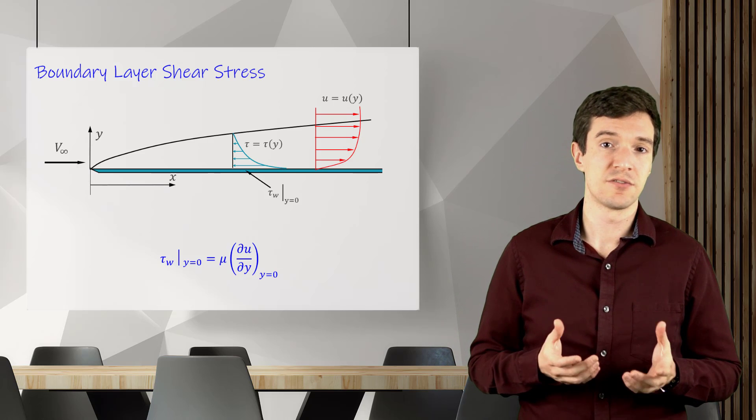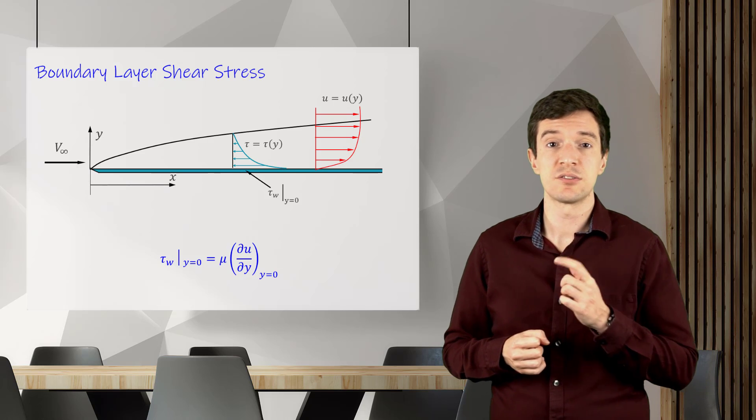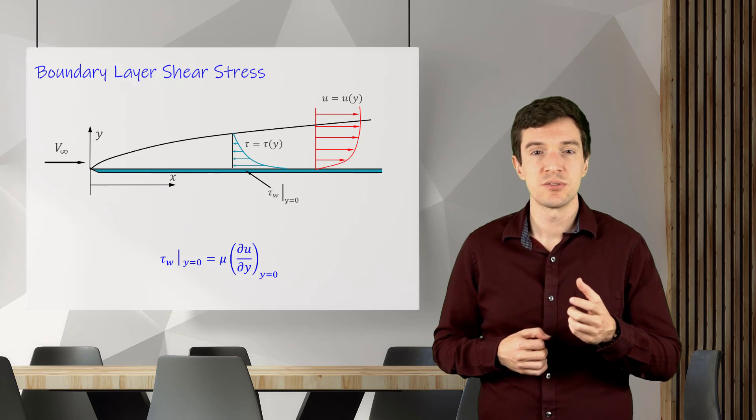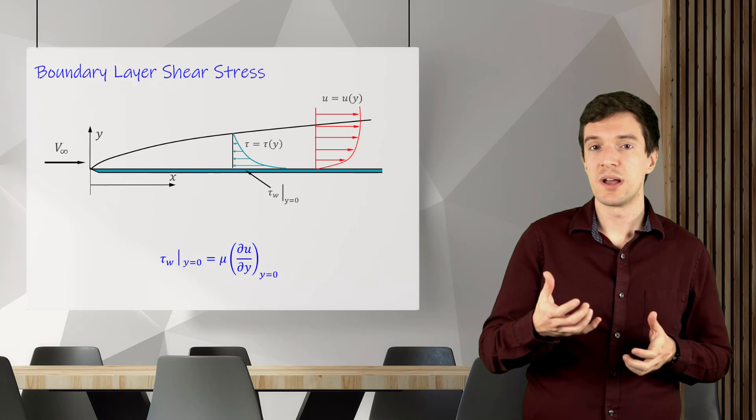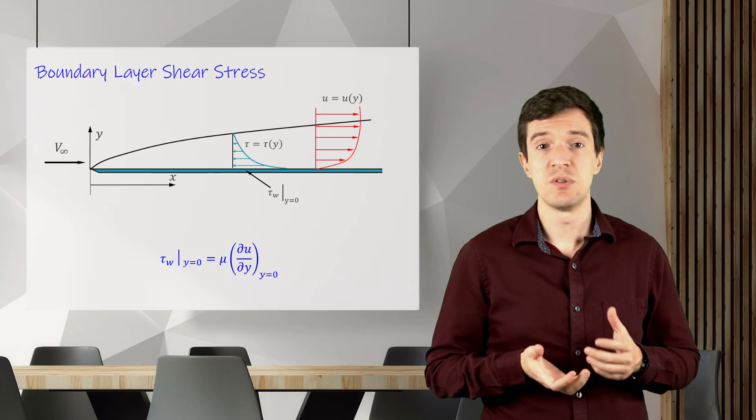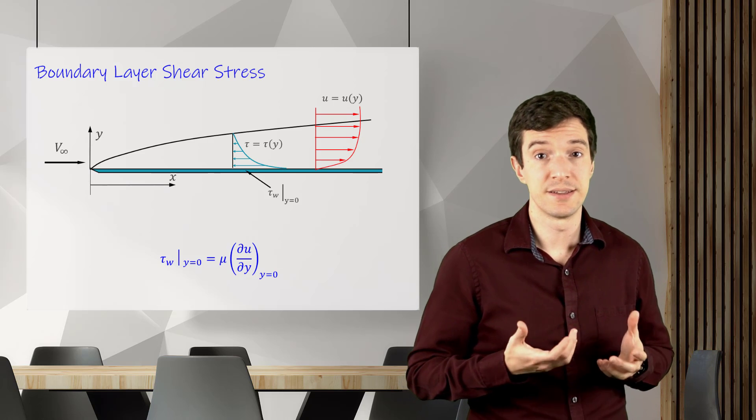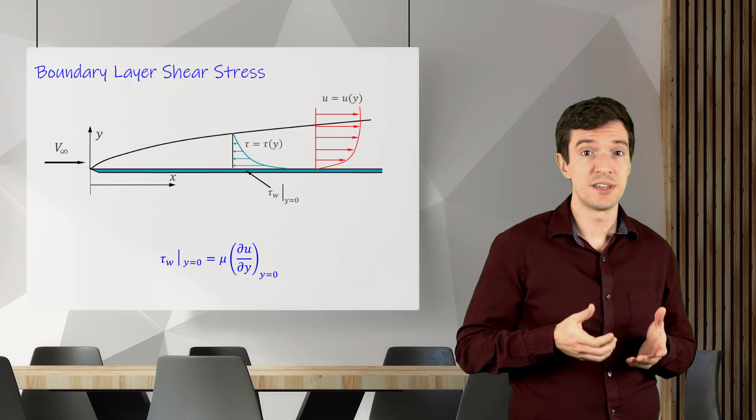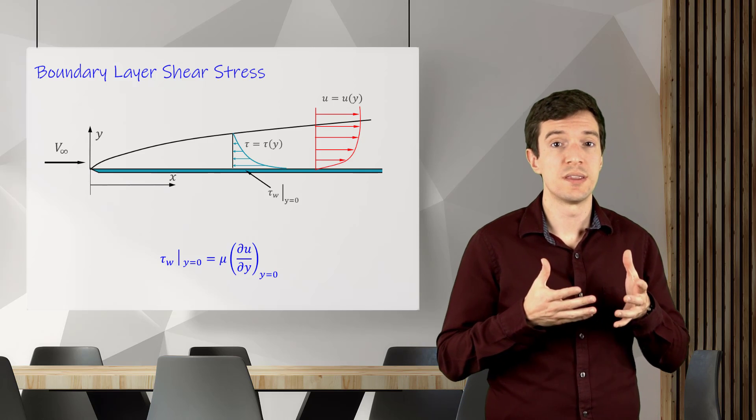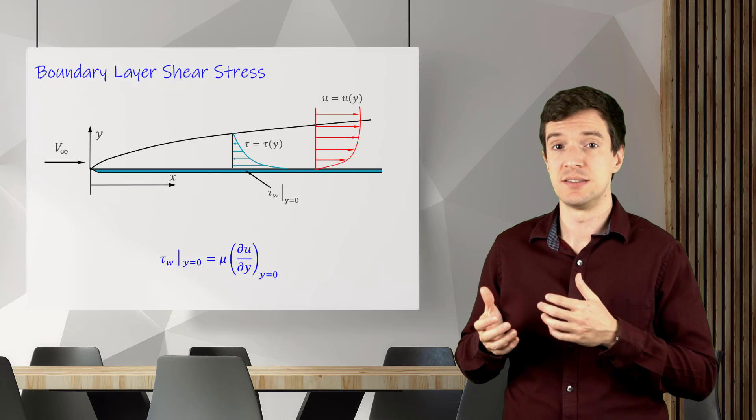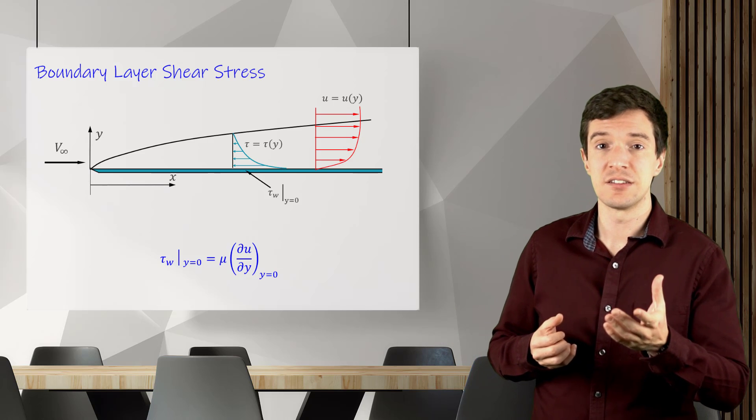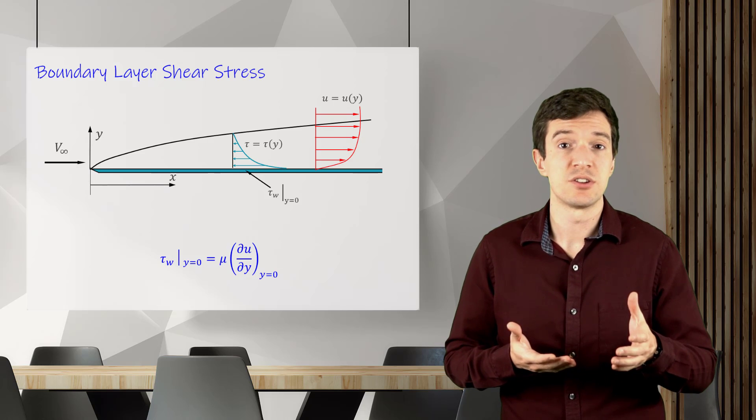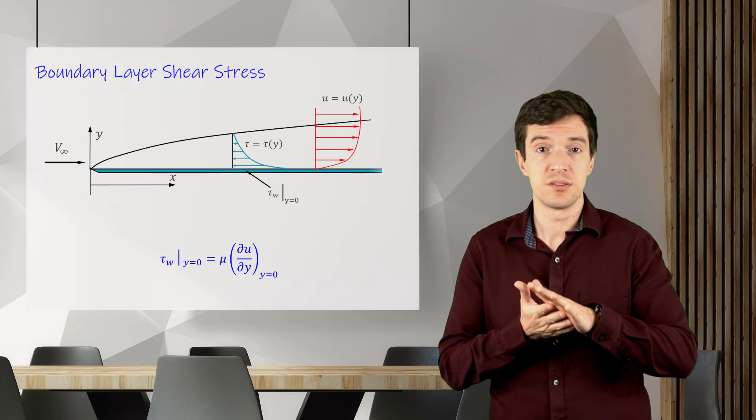As you can see from the sketch, the gradient of velocity is stronger near the wall, and so the shear stress, while both reduce as we move towards the boundary layer edge. An interesting point to note here is that when the wall shear stress is zero, it can identify a possible point of flow separation from the body surface.